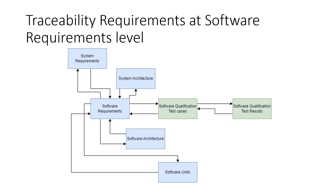To summarize the software requirements level: the inputs are system requirements and system architecture; verification is through qualification test specification and qualification test results; and software requirements act as input for both software architecture and software units.